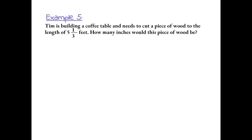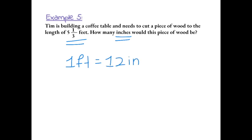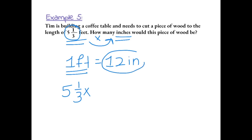Example 5: A team is building a coffee table and needs to cut a piece of wood to the length of five and one-third feet. How many inches would this piece of wood be? We know the length in feet and want to convert it to inches. We know that 1 foot equals 12 inches, so feet is the larger unit — we're converting to a smaller unit, so we use multiplication. We take five and one-third feet and multiply by 12.